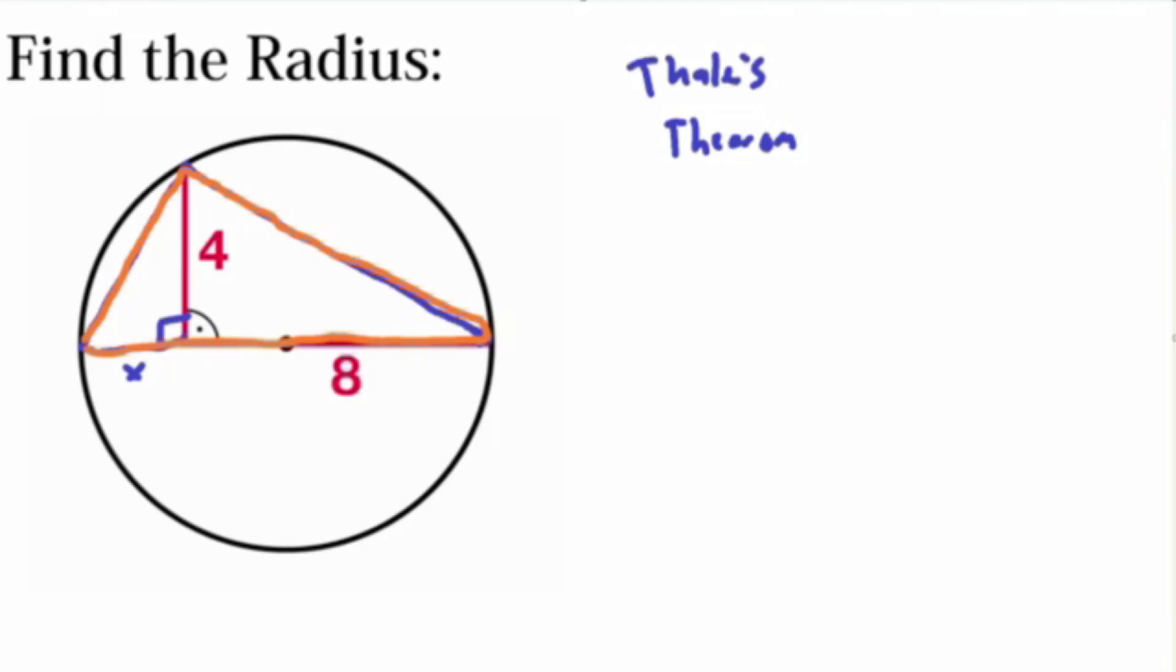This means that the angle opposite of the diameter... So what's the angle opposite of the diameter? It's this one here, right? Will always be a right angle. So that means that this angle here is actually a right angle.